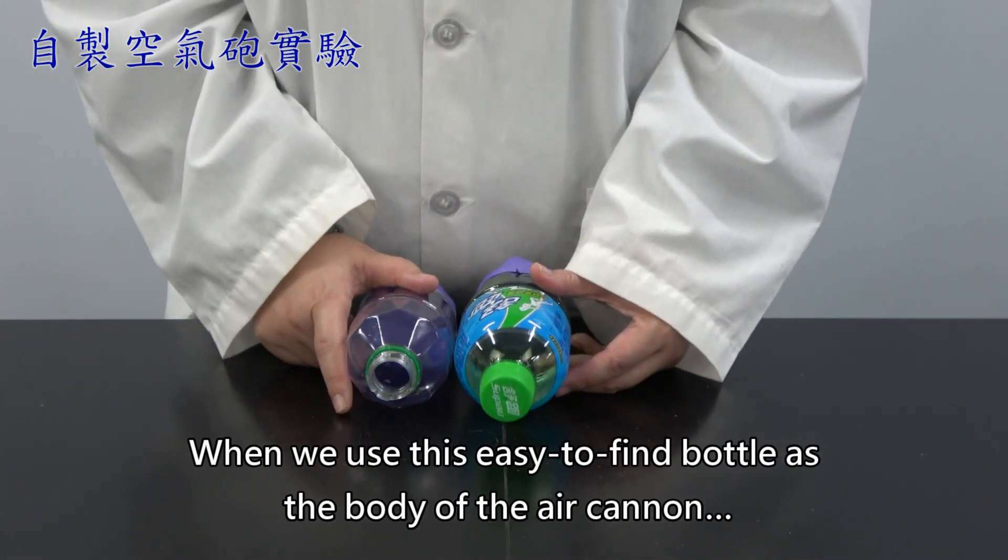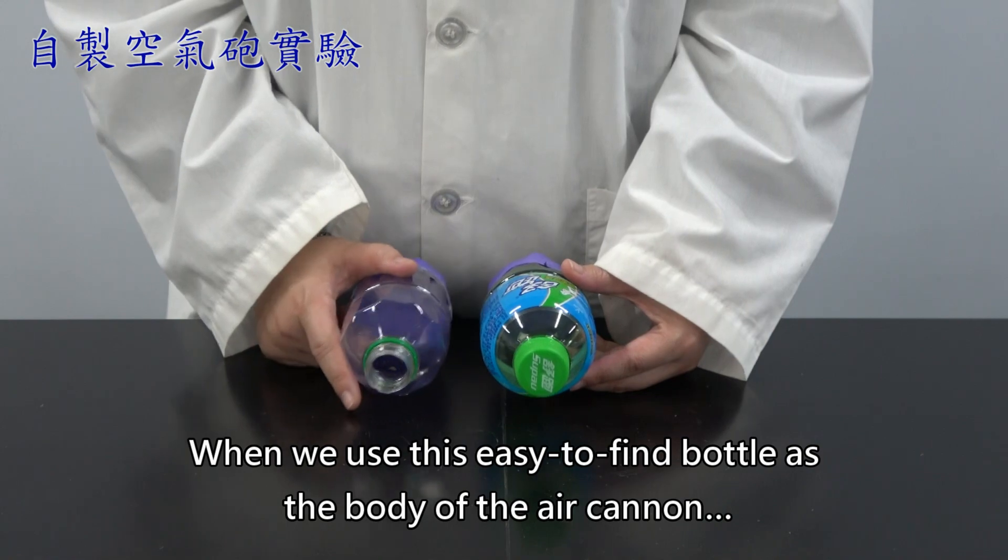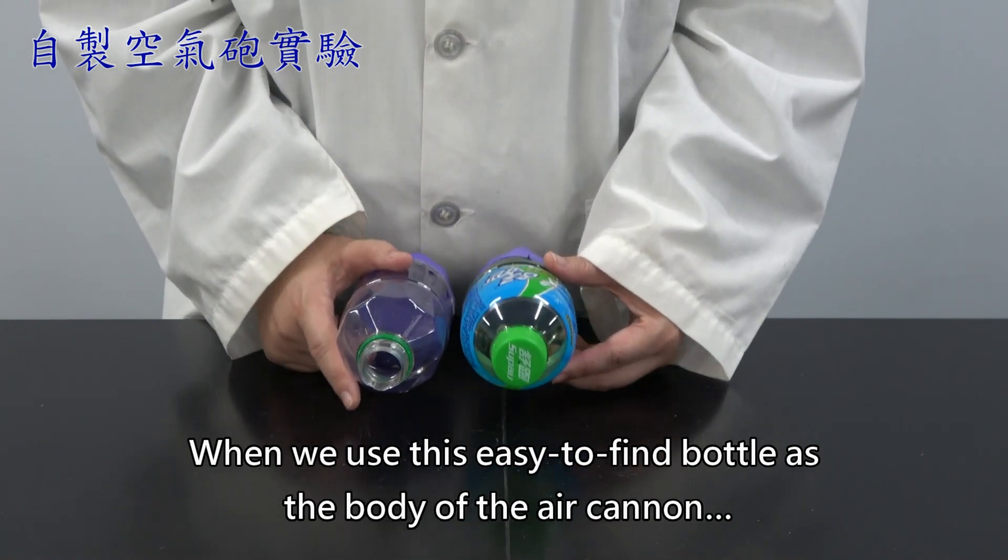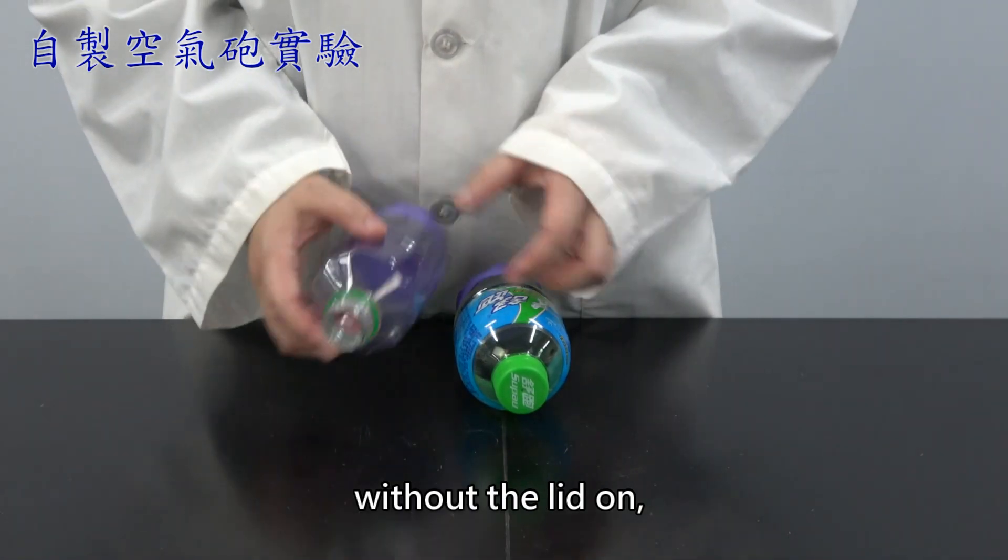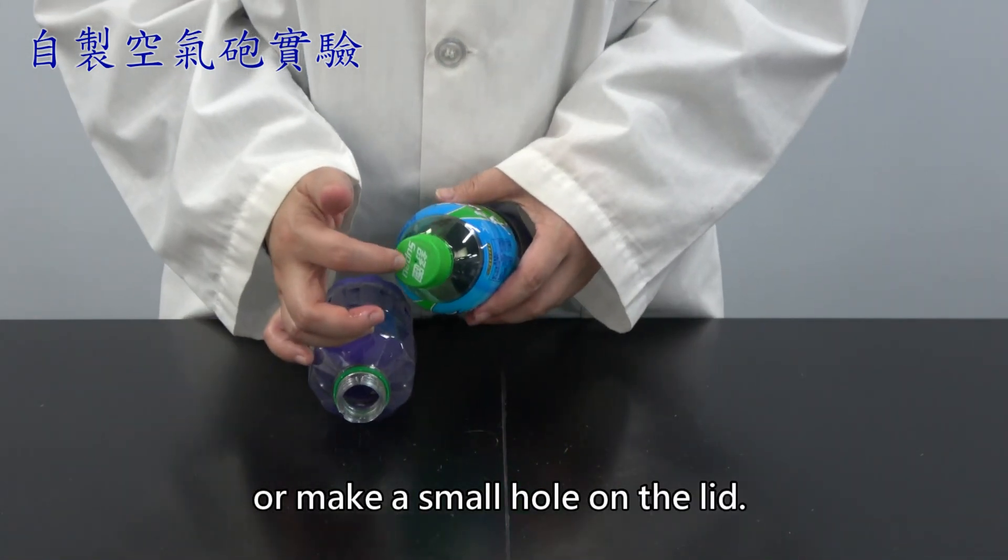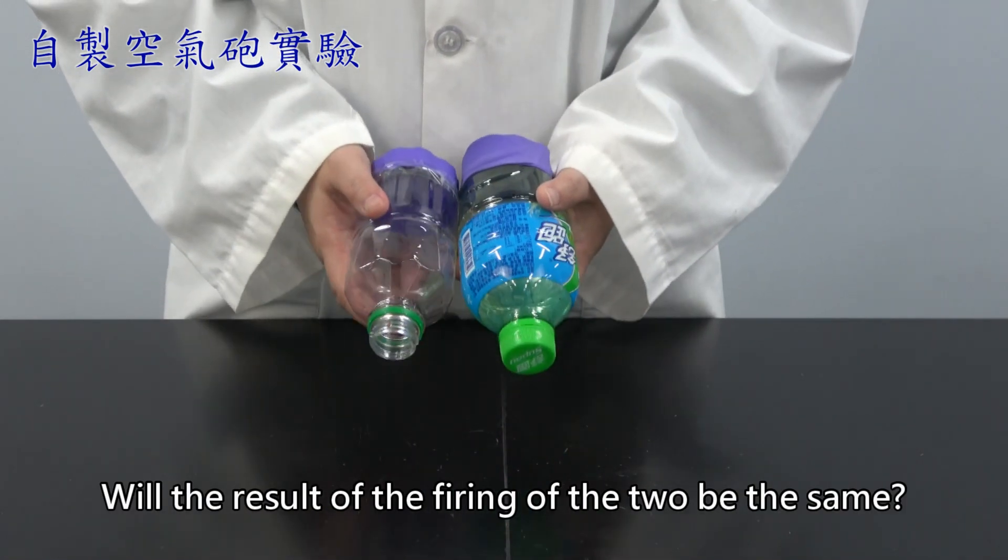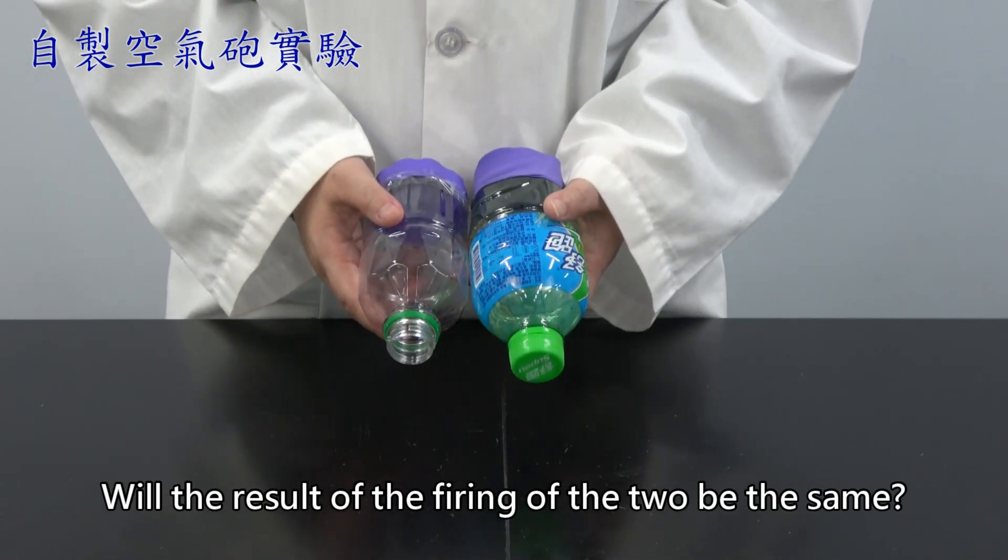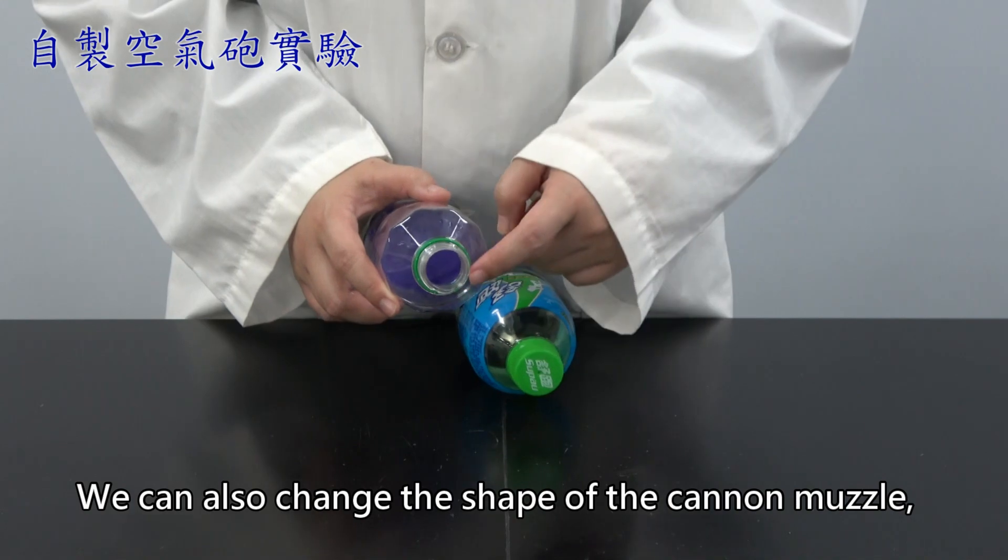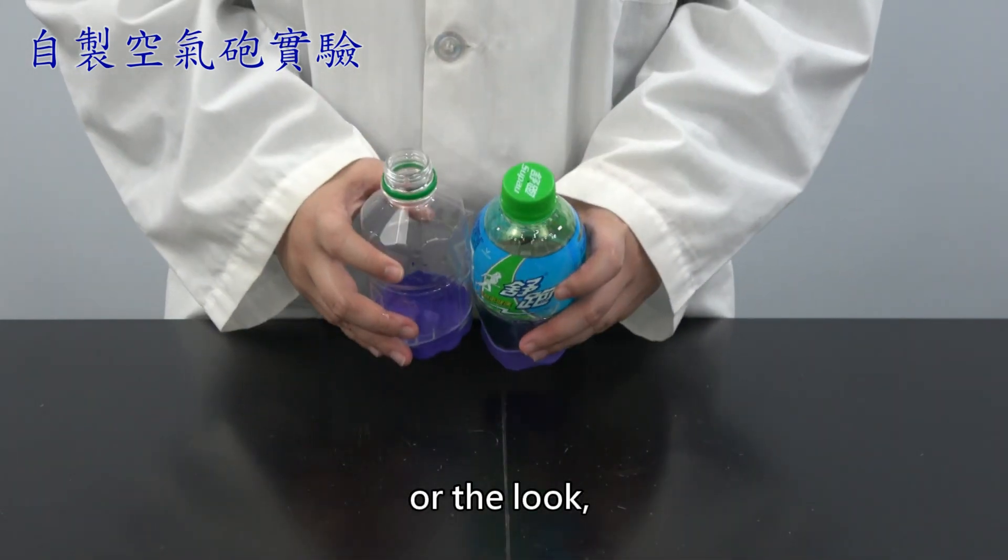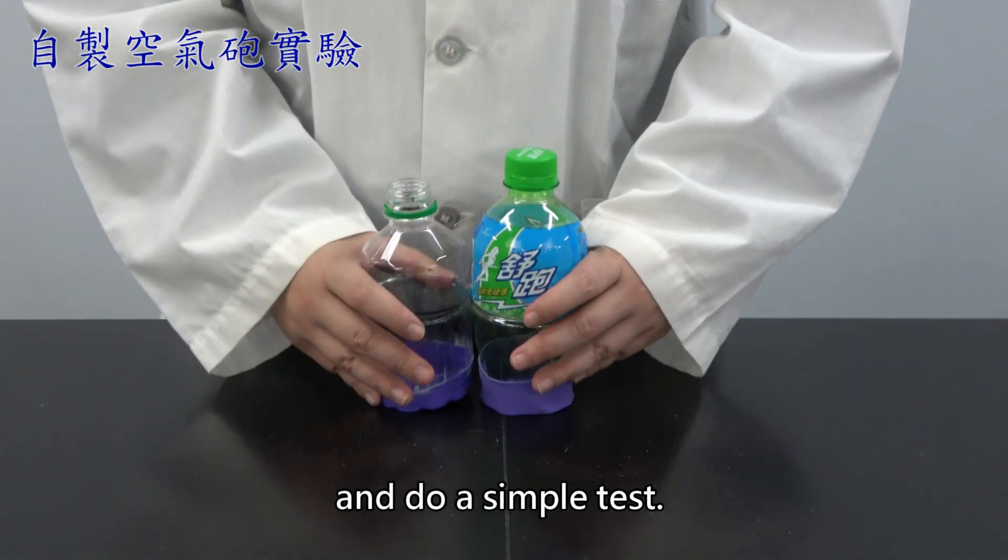When we use this easy to find bottle as the body of the air cannon, we can test and see without the lid on or make a small hole on the lid. Will the result of the firing of the two be the same? We can also change the shape of the cannon muzzle or the look and do a simple test.